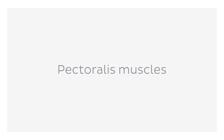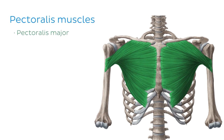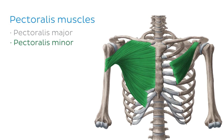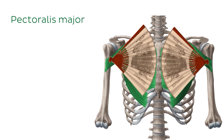Let's begin with the pectoralis muscles, which are made up of the pectoralis major and the pectoralis minor muscle. The pectoralis major muscle is a large fan-shaped muscle of the shoulder joint.